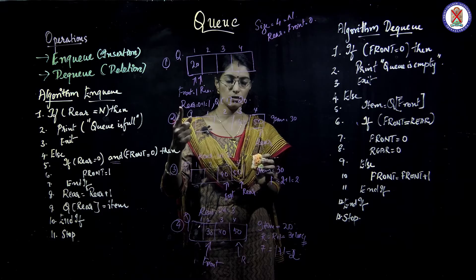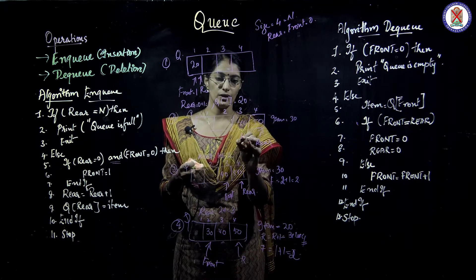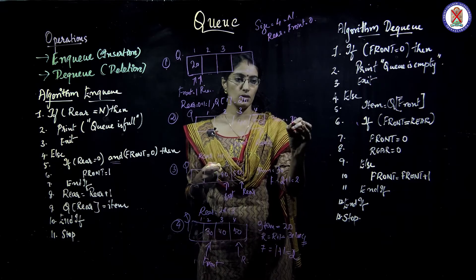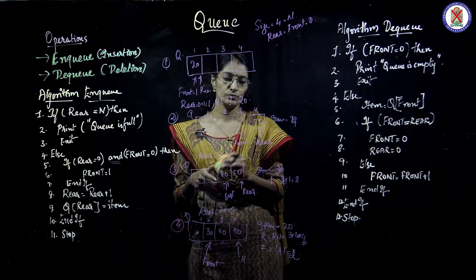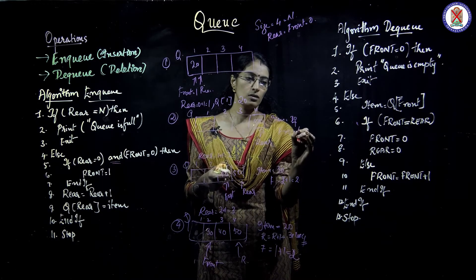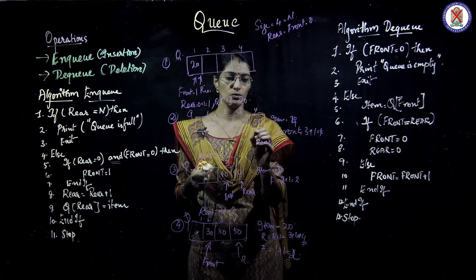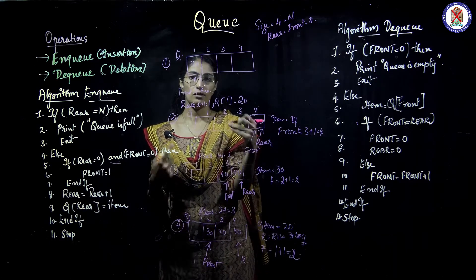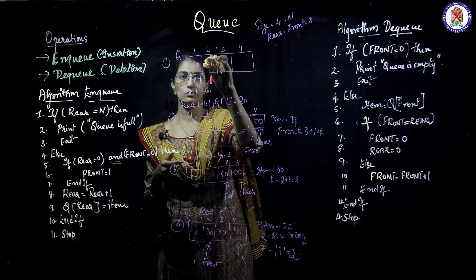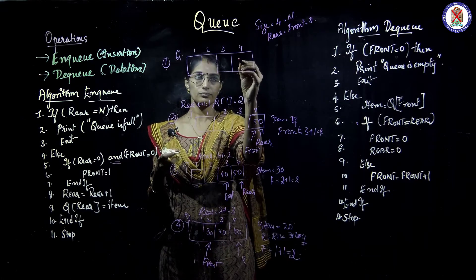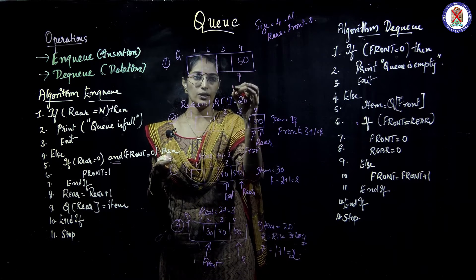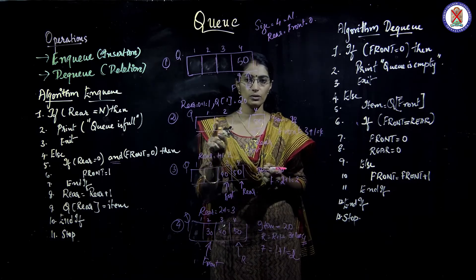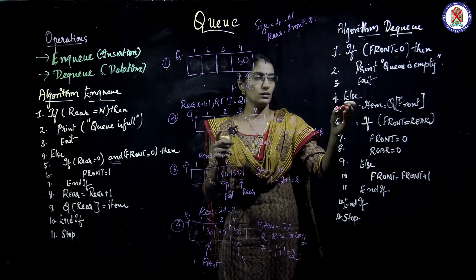For the third deletion, the first and second elements have gone. Front is pointed to 40. The item is 40, so 40 goes out of the queue. Front equals front plus 1, that is 3 plus 1 equals 4. Front is now pointing to 50.